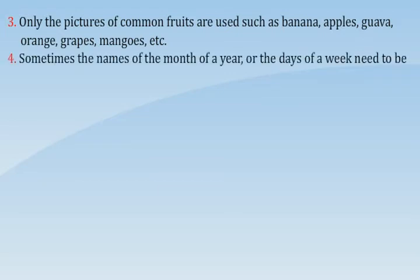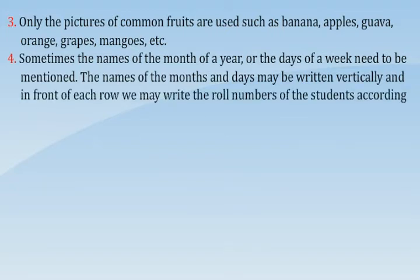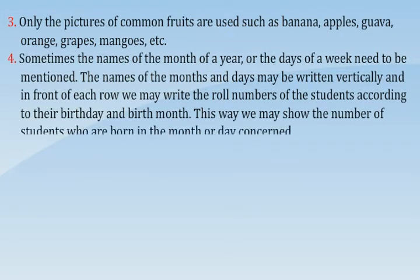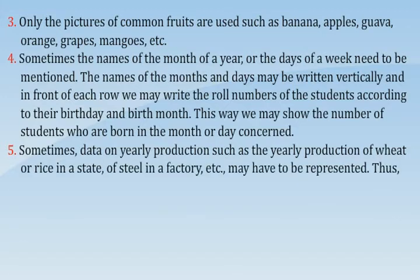Sometimes the names of the months of a year or the days of a week need to be mentioned. The names of the months and days may be written vertically, and in front of each row we may write the roll numbers of students according to their birthday and birth month. This way we may show the number of students born in the month or day concerned. Sometimes data on yearly production, such as the yearly production of wheat or rice in a state, or steel in a factory, etc., may have to be represented.